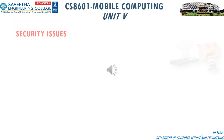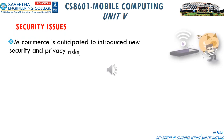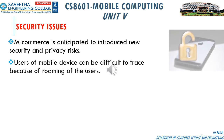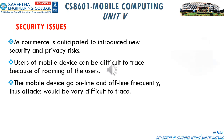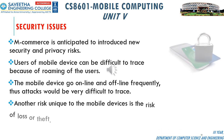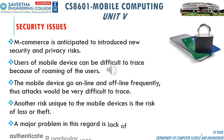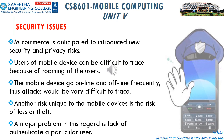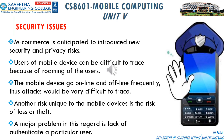M-commerce is anticipated to introduce new security and privacy risks. Users of mobile devices can be difficult to trace because of roaming — mobile devices go online and offline frequently, making attacks very difficult to trace. Another risk unique to mobile devices is loss or theft, and a major problem in this regard is the lack of authenticating a particular user.